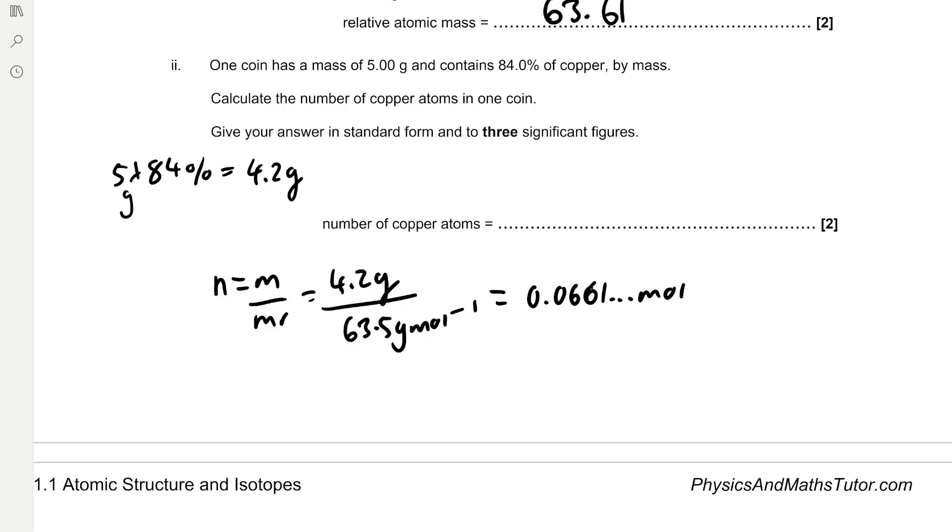Then to find the number of atoms we have to multiply by Avogadro's constant, which is 6.02 times 10 to the 23, and it can be found on the datasheet. Which gives us 3.98 times 10 to the 22 to three significant figures and in standard form.